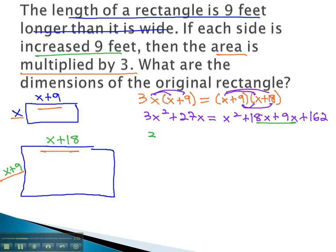Combining like terms on the left side, we have 3x squared plus 27x equals x squared plus 27x plus 162.